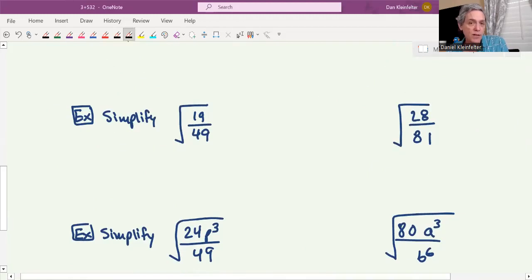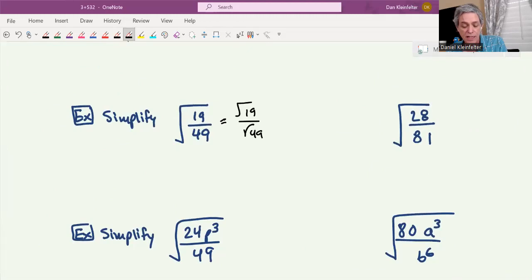19/49. We'll call that the square root of 19 divided by the square root of 49. The square root of 19, we can't really do anything with that at all, so we're going to leave that as the square root of 19. The square root of 49 though, we'll get 7 for that.